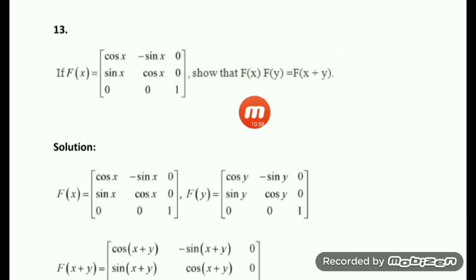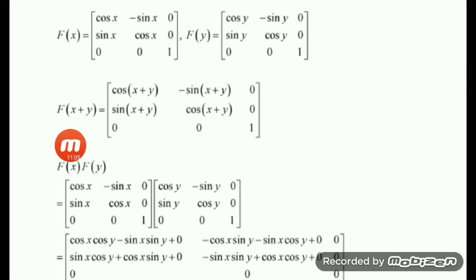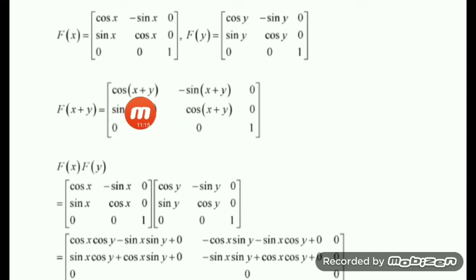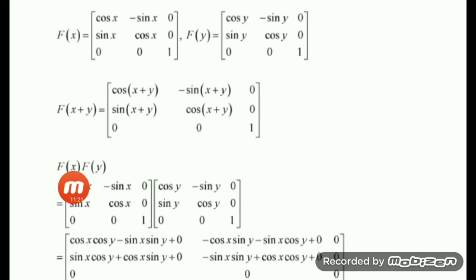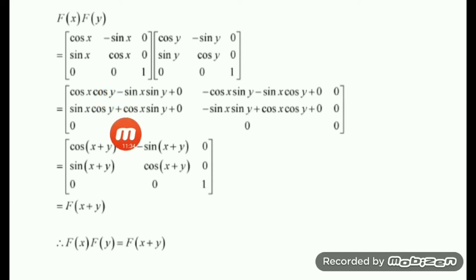F(Y) will be equal to [cos Y, -sin Y, 0; sin Y, cos Y, 0; 0, 0, 1]. To get the left hand side we do the matrix product F(X)·F(Y), and for the right hand side replace X by X+Y: F(X+Y) = [cos(X+Y), -sin(X+Y), 0; sin(X+Y), cos(X+Y), 0; 0, 0, 1]. Both are 3×3 square matrices so matrix multiplication exists.